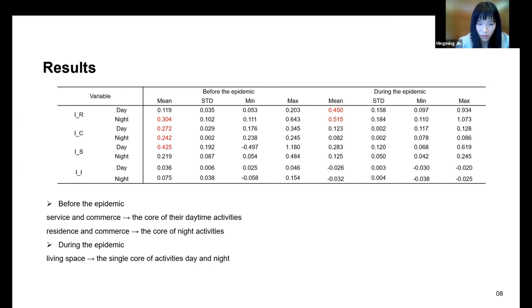The average coefficient of the others is smaller because residents' demand for commercial, service, and industrial functions are weakened, especially for commerce. We can find that the epidemic has led to the change of behavior patterns. Before the epidemic, residents take service and commerce as the core of daytime activities and residence and commerce as the core of nighttime activities. But during the epidemic, residents take living space as a single core of activity both day and night.